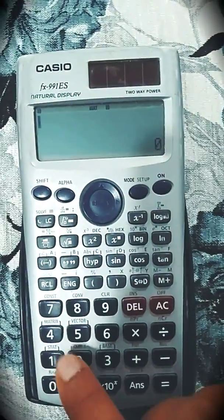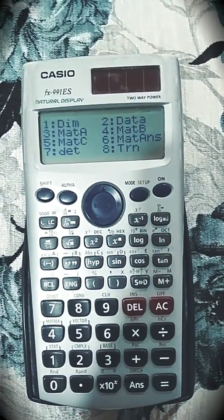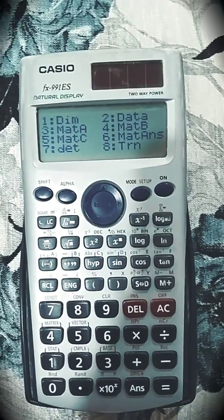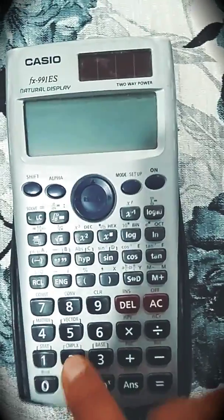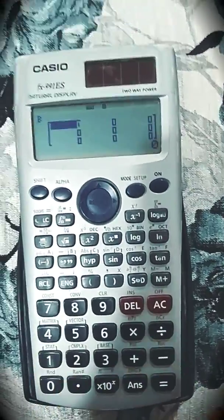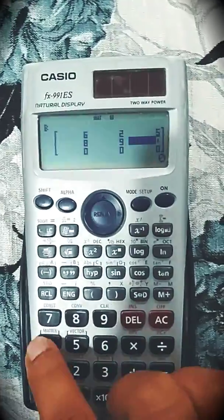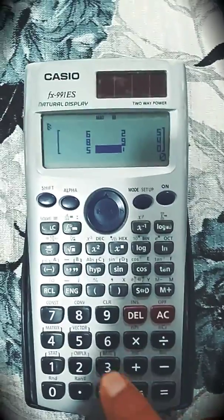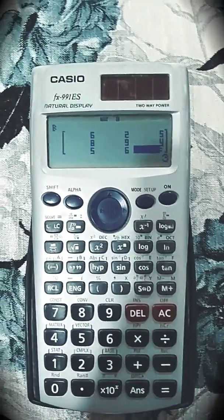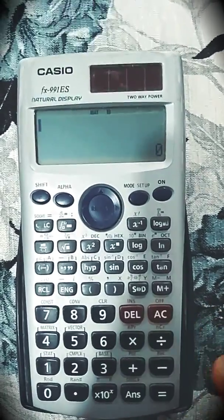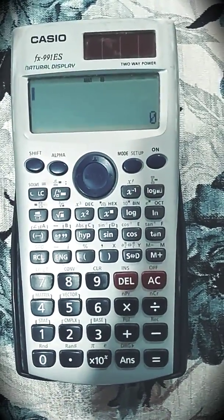Shift 4. Now I want to insert again one more matrix. So I will go for data. Now I will put matrix B. Again it will be 3 by 3. Put the elements. After this, press AC. So we have inserted two matrices, matrix A, matrix B.